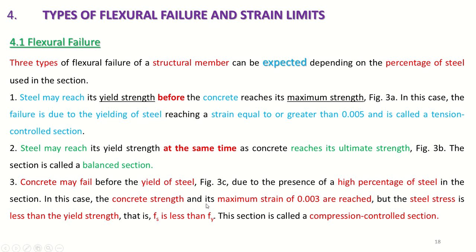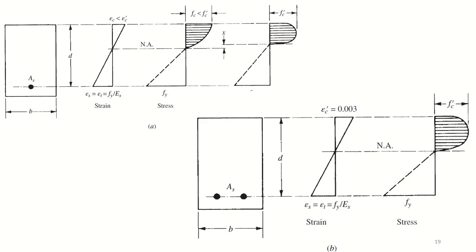In the third case, the concrete reaches its maximum strain. It is very important to keep in mind that the maximum strain in concrete is 0.003, but the steel stress is less than the yield strength — Fs is less than Fy. So this section is called a compression control section. To summarize: tension control section, balanced section, and compression control section are the three flexural failures.